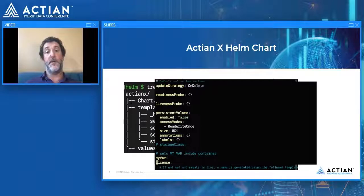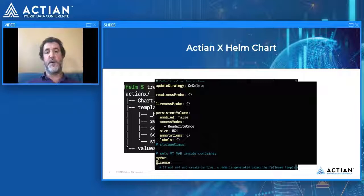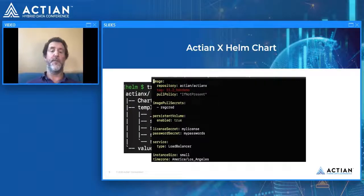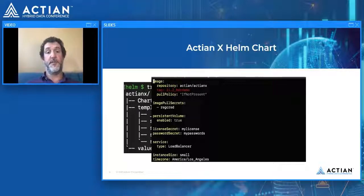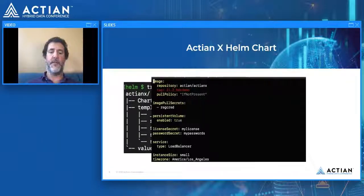Scrolling further in the values file, we'd find ActianX-specific requirements: whether persistent volumes are enabled (default is off, but we'll enable them in the demo), the size of the deployment and how it might be configured, and at the bottom any user-serviceable data such as license information. When we deploy, we create a values file for the deployment specifying the image tag, the secrets being used, the service type, the instance size, and the time zone — in this case a small instance in the Los Angeles time zone.